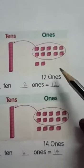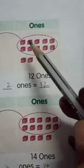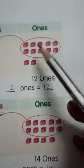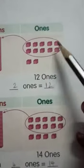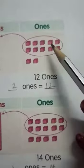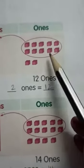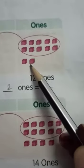And, see here, here we have 12 ones. 1, 2, 3, 4, 5, 6, 7, 8, 9, 10, 11, 12. So, 12 ones can be written as 1 ten and 2 ones.